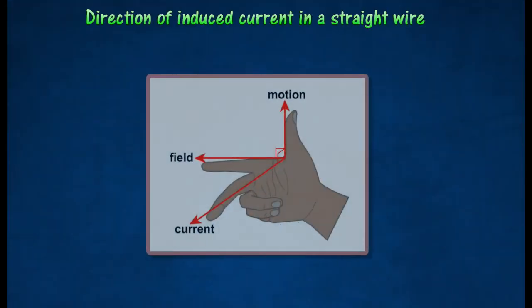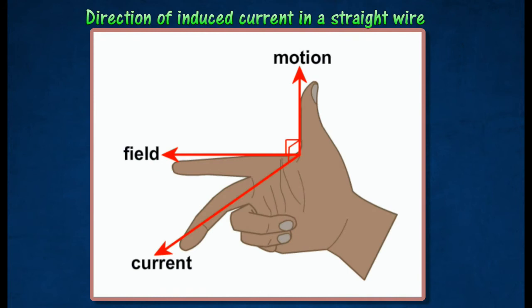The direction of the induced current in a straight wire at right angle to the magnetic field can be worked out using Fleming's right-hand rule.